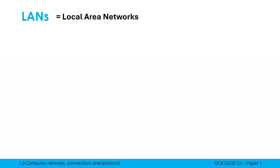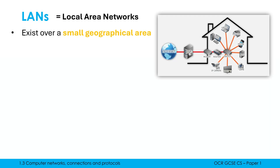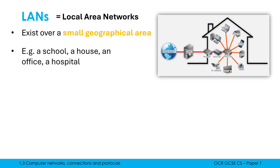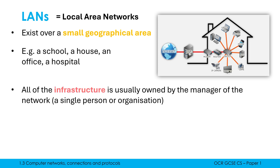LAN stands for Local Area Network. It's over a small geographical area, often a single building or a couple of buildings in very close proximity. Now there isn't a fixed limit — it's not that if it's beyond 30 metres wide it's no longer a LAN. It doesn't quite work like that, because the other main categorisation is based on who owns all of the stuff in the network.